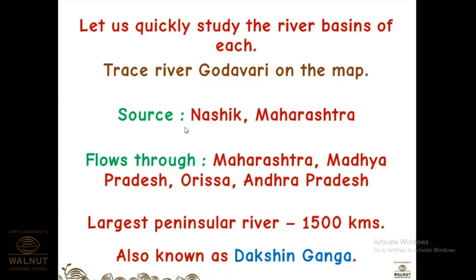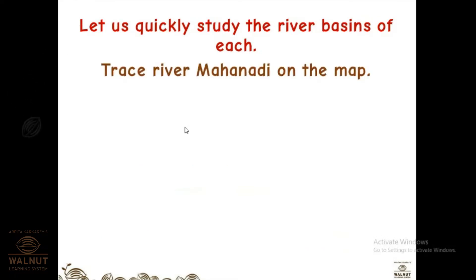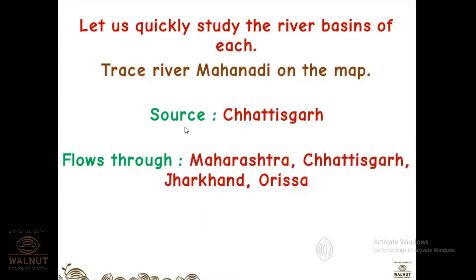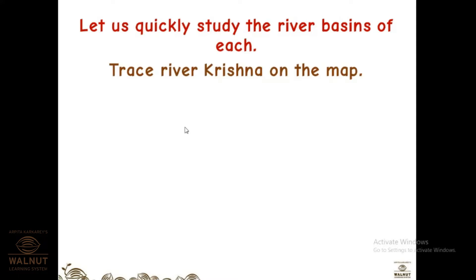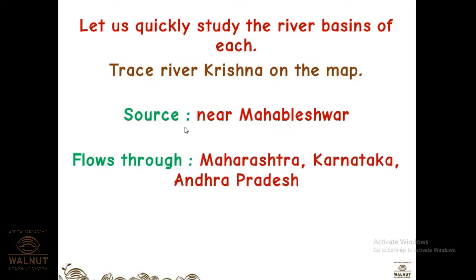River Mahanadi originates from Chhattisgarh and flows through Maharashtra, Chhattisgarh, Jharkhand, and Odisha — four states in total. Its total length is 860 kilometers. Next is River Krishna — the source is Mahabaleshwar in Maharashtra.